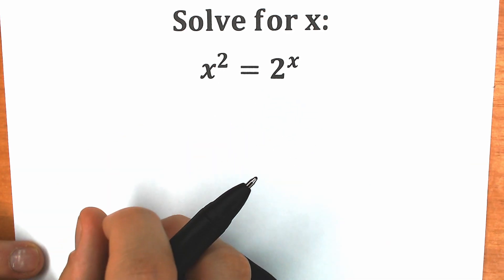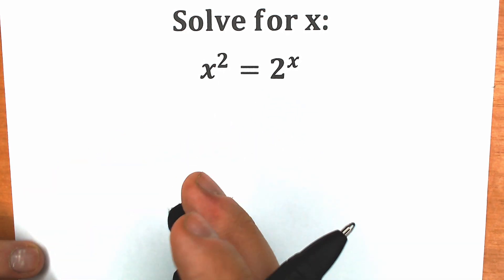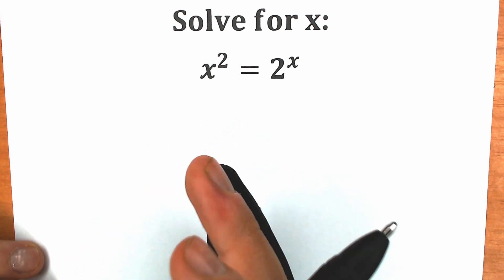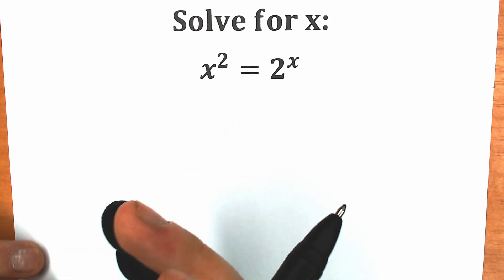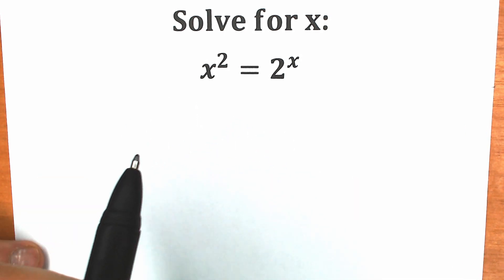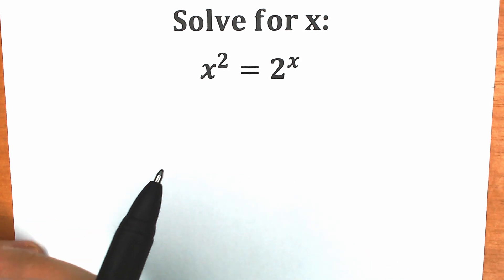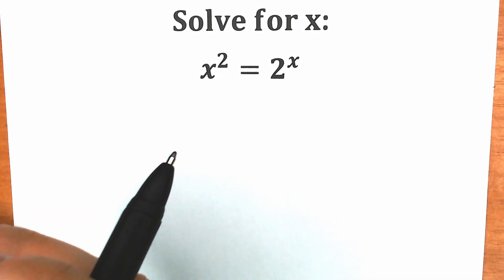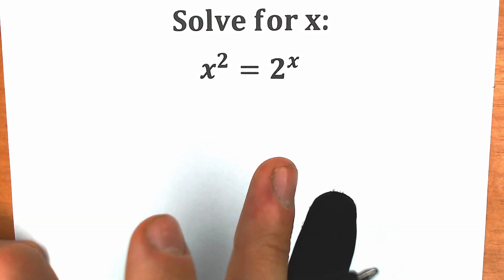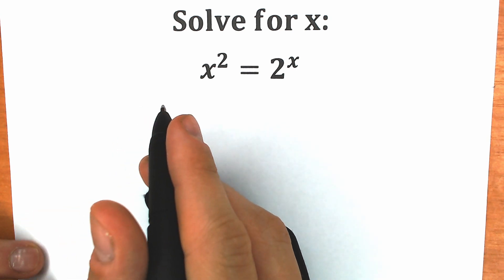A lot of students may be saying, hey mister, this is a very easy question — x equals 2, 2 squared equals 2 squared, and that's it. I say okay, this is a correct answer, you solved this challenge absolutely correct, but what about the solution? How can you solve it? And are you sure that we have only one root? Let's try to think a little bit about this question.